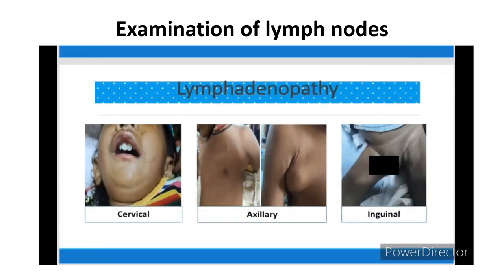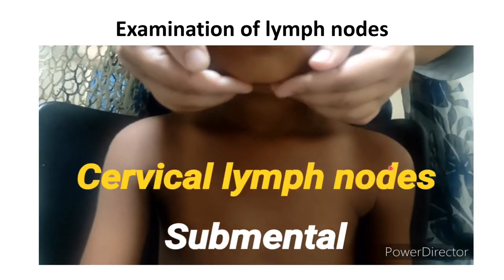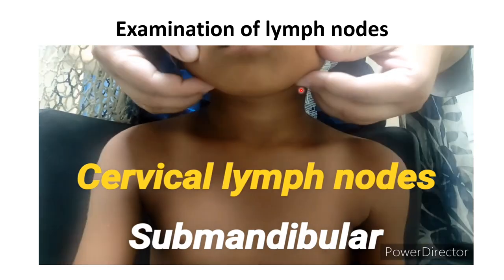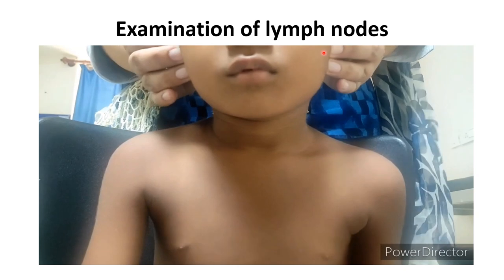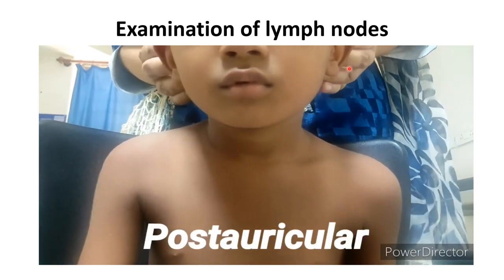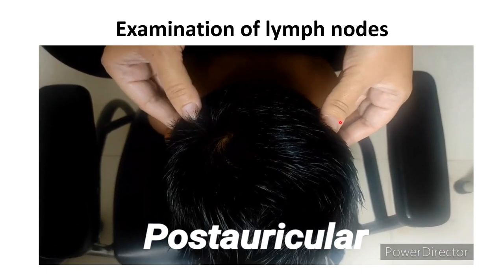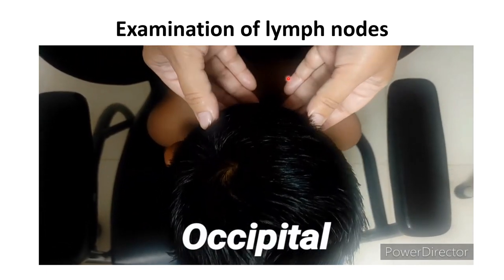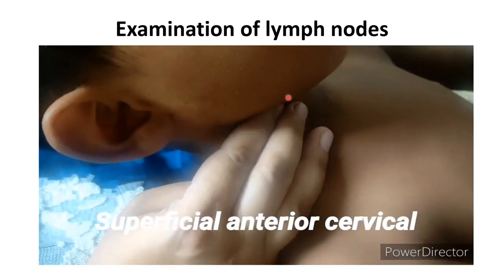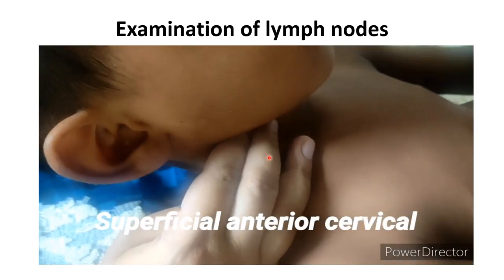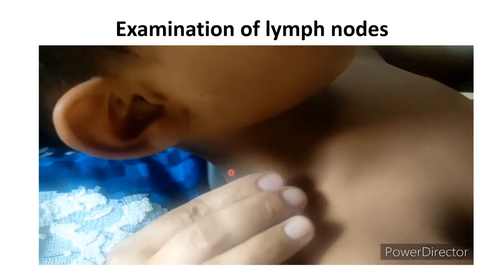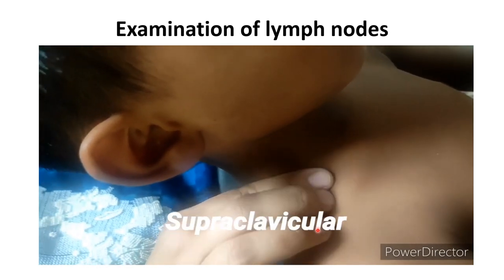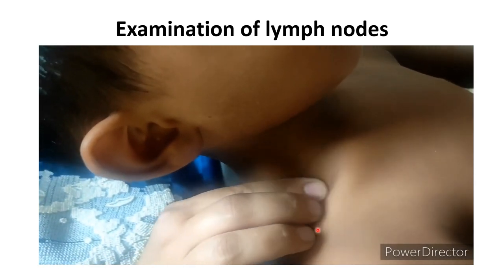Now the examination of lymph nodes — we have to palpate the cervical, axillary, and inguinal lymph nodes for lymphadenopathy. We start from the submental, then submandibular, then pre-auricular lymph nodes in front of the ear. Then the post-auricular lymph node — in this video I am palpating post-auricular. Now the occipital lymph node at the base of the skull. Now the superficial anterior cervical lymph node in front of the sternocleidomastoid, and the posterior cervical just behind the sternocleidomastoid. Now the supraclavicular lymph node.